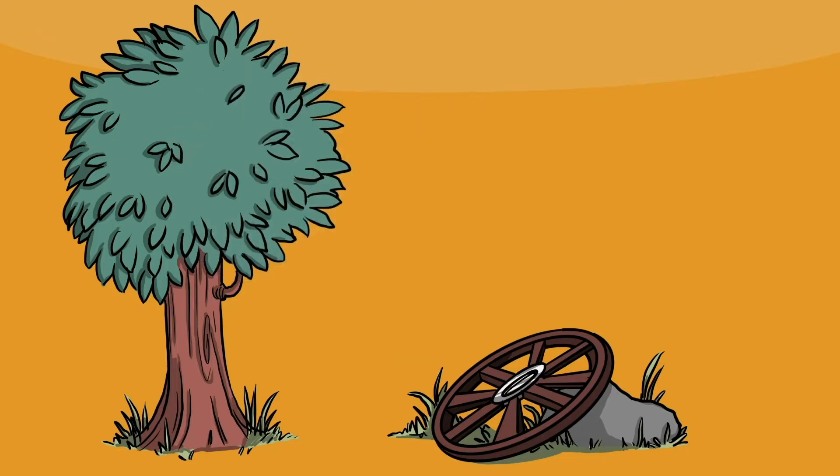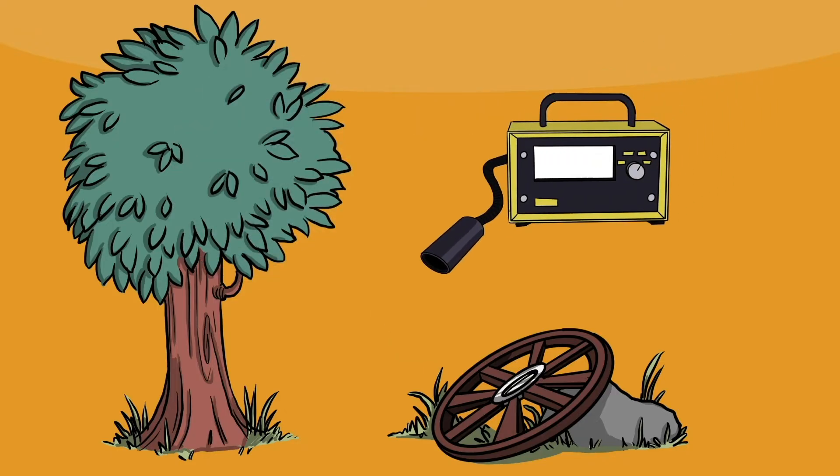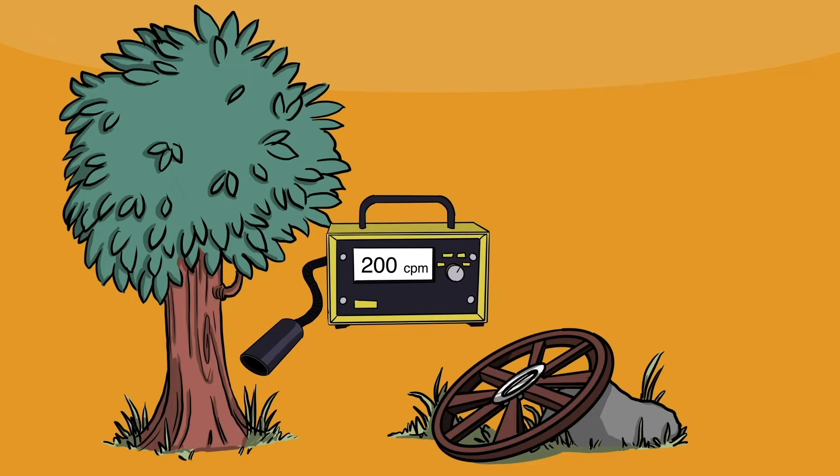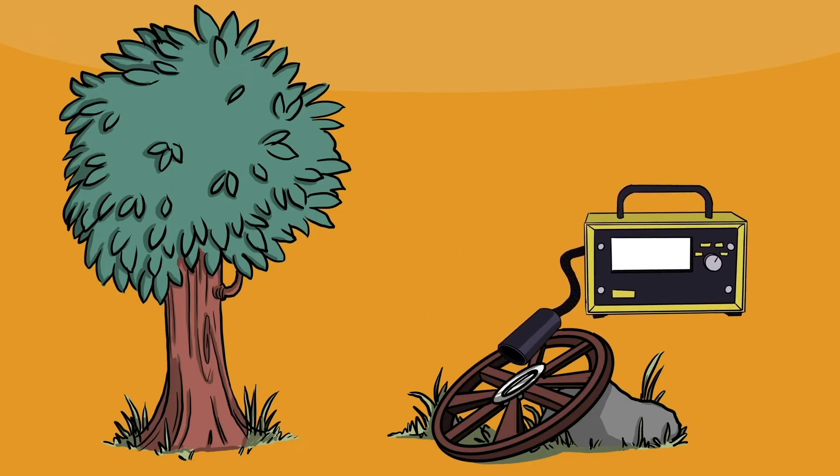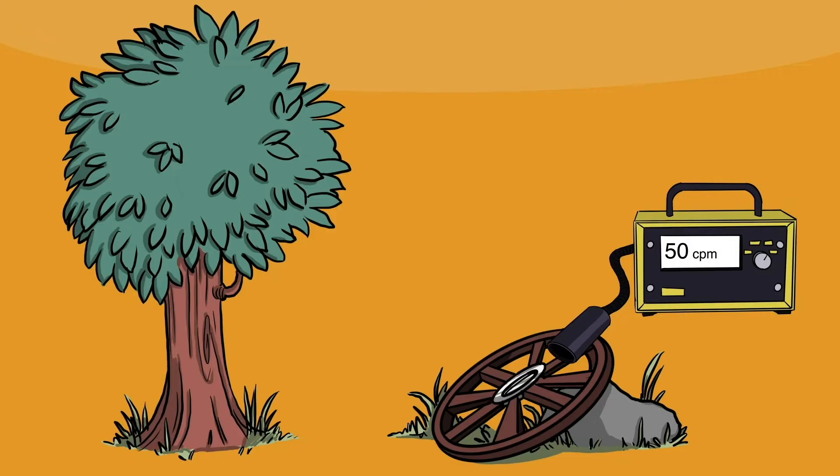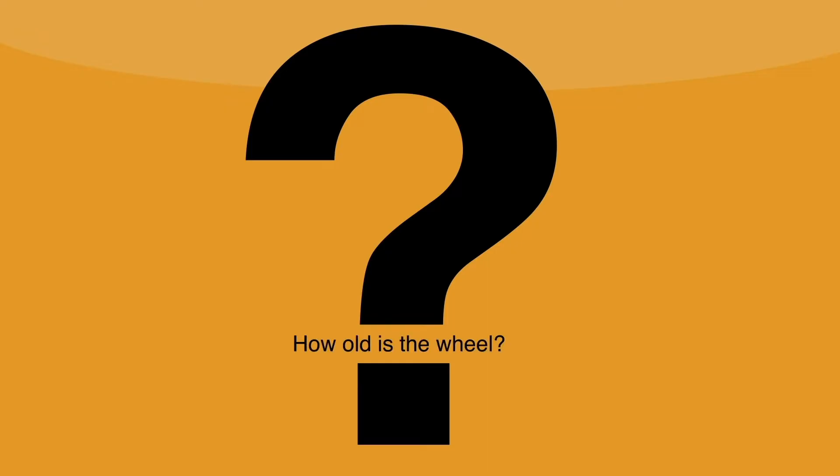So let's look at the count rate of a tree that's still alive. We see that it's 200 counts per minute. Now let's look at the cart wheel. The count rate here is only 50 counts per minute. So how long is it since the wheel was made?